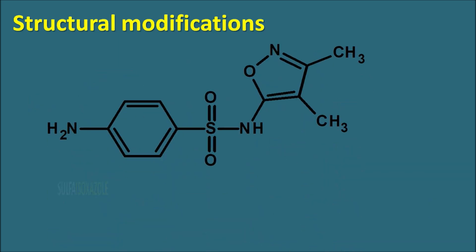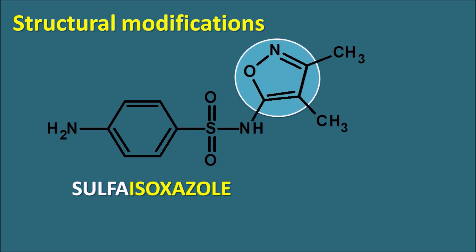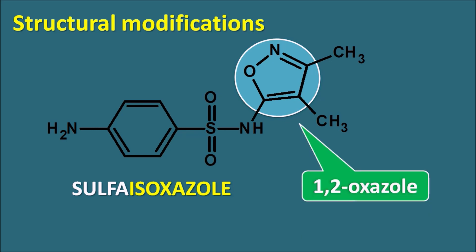Sulfisoxazole has an isoxazole (1,2-oxazole) ring system attached at the fifth position to the amide nitrogen. This ring has oxygen at position 1 and nitrogen at position 2. The attachment of this isoxazole ring gives sulfisoxazole a pKa of approximately 5.0.